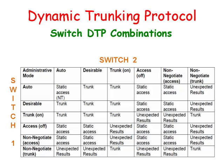Now let's look at all the possible combinations that Dynamic Trunking Protocol can use between two switches. Horizontally we have switch one, and vertically we have switch two. Viewing this matrix will allow you to get a better idea of what will happen to an interface between two switches using the various modes.